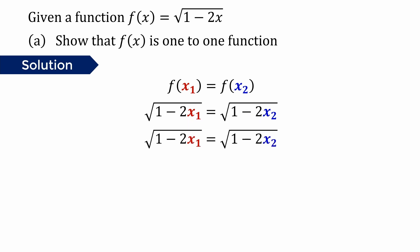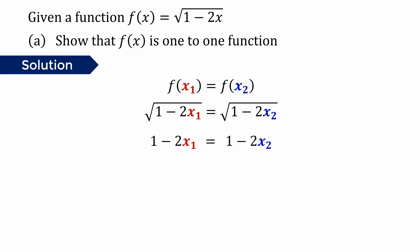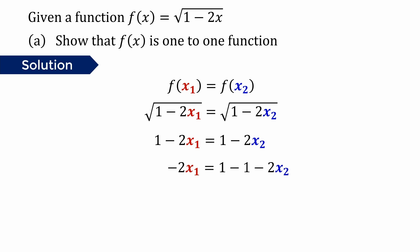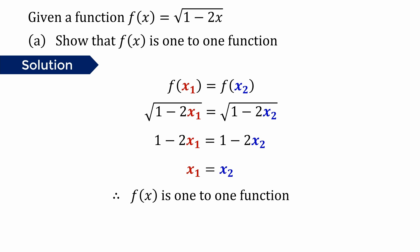We're going to simplify this equation. First, we can square both sides. What's left is just inside the square root, which is 1 minus 2x1 equals 1 minus 2x2. Then we simplify: subtract 1 from both sides, then divide both sides by negative 2. What's left is x1 equals x2.